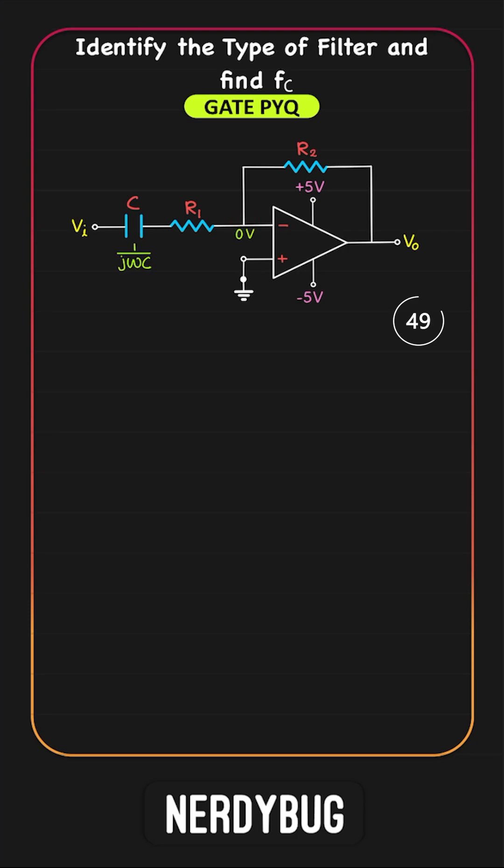Apply KCL at the inverting terminal. This current will be Vi minus 0 volt divided by 1 by j omega c plus R. This will be equal to the current flowing through R2, which is 0 minus Vo divided by R2.